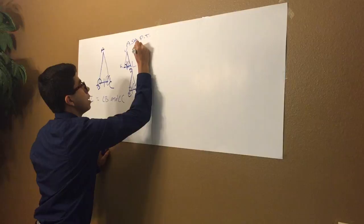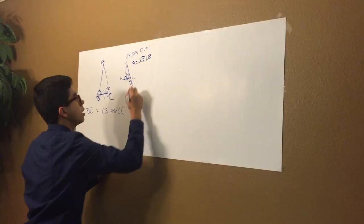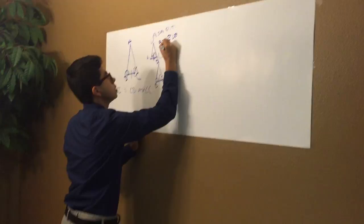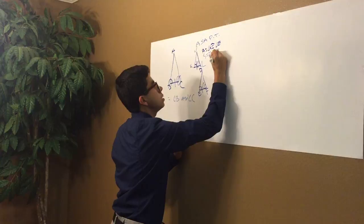And for side, segment KL is congruent equal to segment EF, so far so good.